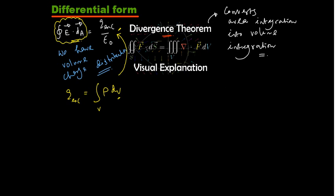The divergence theorem comes handy here. It tells us that the closed surface integral of E·dA equals the volume integral of (∇·E) dV — a dot product between two vectors converted to a volume integral. Volume is a scalar, so both sides remain scalar quantities.